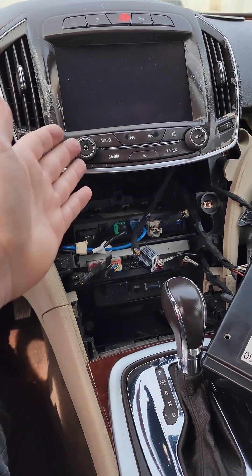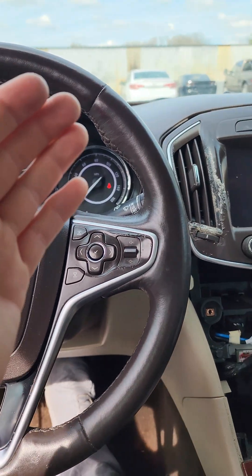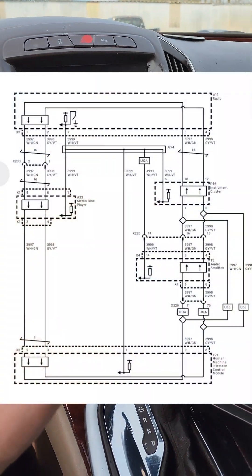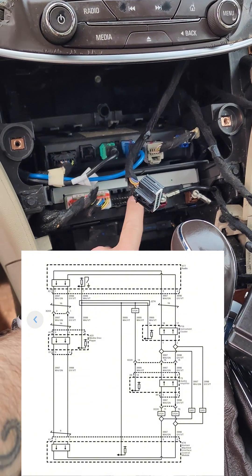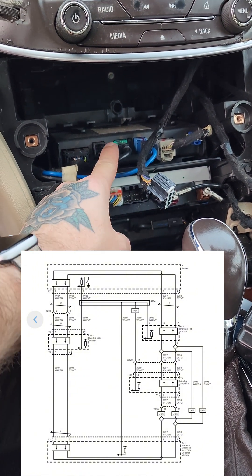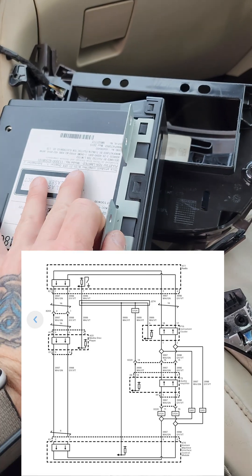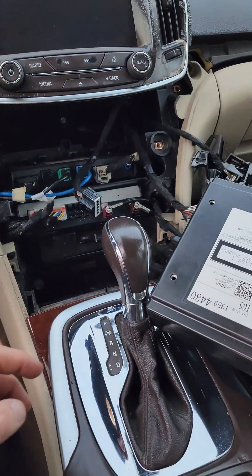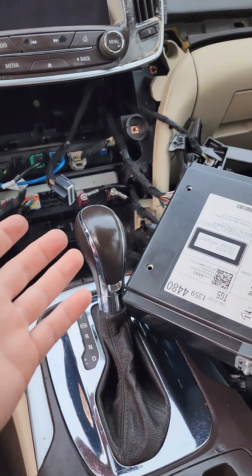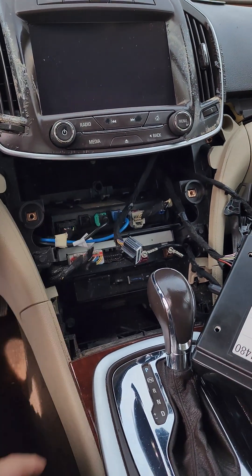Luckily this one, everything is kind of all right here. The wiring diagram shows us that we have a radio, an HMI, a media player, and then a cluster. So, what can we do? How can we figure this out? It's not really that hard.